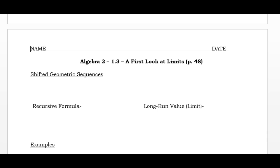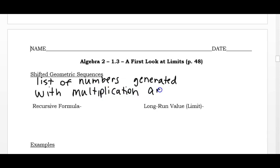A shifted geometric sequence is a list of numbers generated with multiplication, because it is geometric, but also addition, because it's a shifted sequence. So it's still geometric, but we shift it by doing an addition or a subtraction, so we do both.